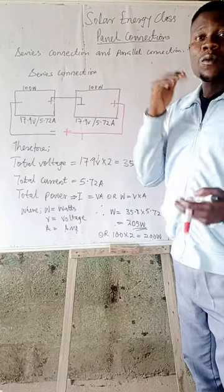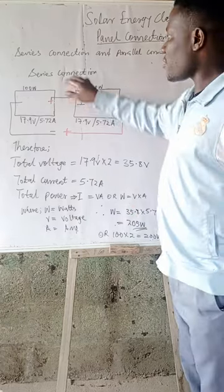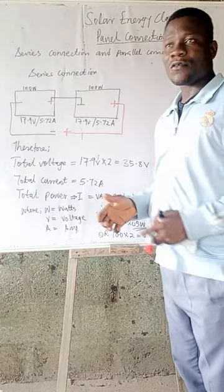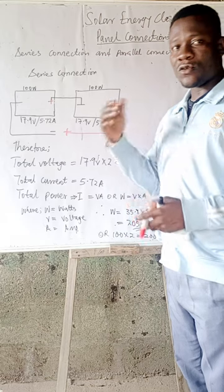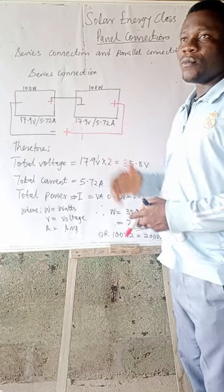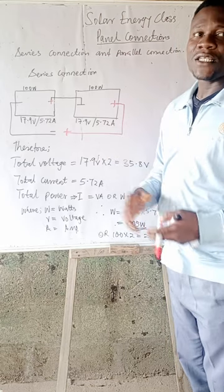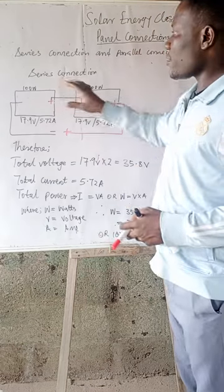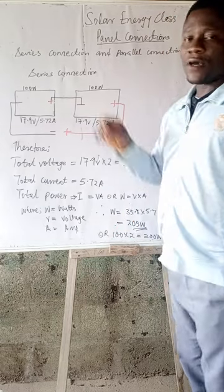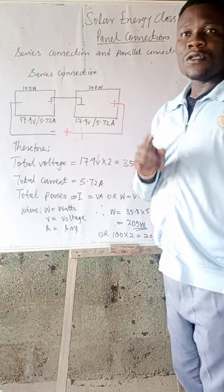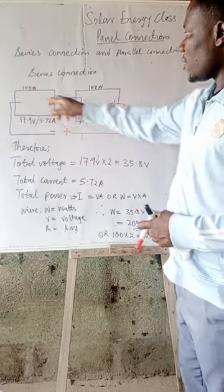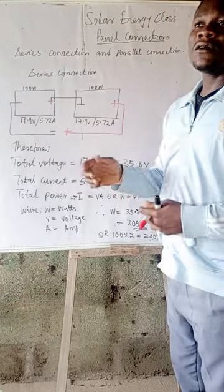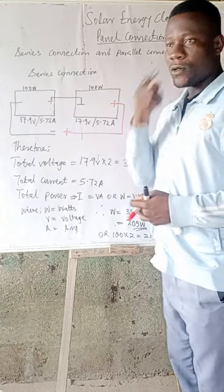I want us to focus on each one by one and let's begin with the series connection, because when you run a panel connection it has its own result, and when you run a series connection it has its own result. So before we combine them, let's begin with one and know what it gives us. Today this is the series connection. Let's have a consideration using a particular set of panel — the panel I use here is a 100 watt panel, depending on the company configuration.